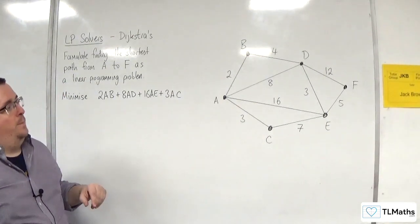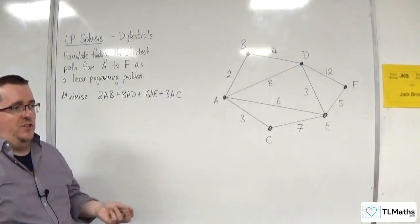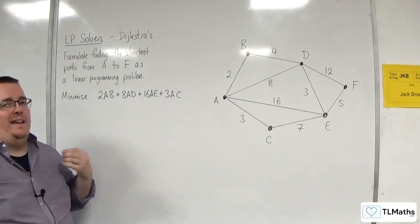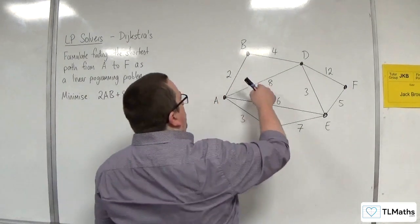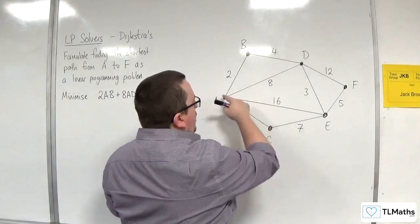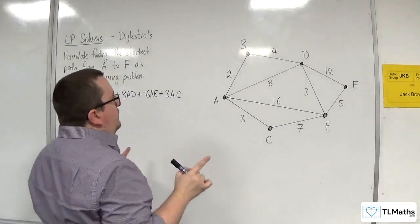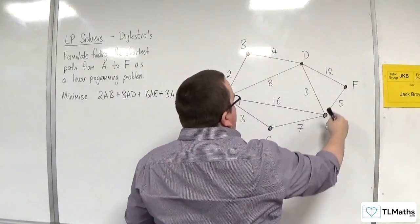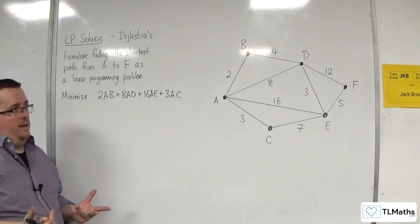Essentially what I've turned this into is that I've turned it into a directed network where these four edges are going in that direction only. And likewise, I'm going to have DF and EF only. I'm not going to have FD and I'm not going to have FE.